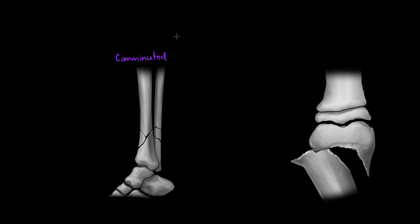Looking at our tibia and fibula here, we can see a new type of break called a comminuted fracture. This is where there has been a complete separation of bone into more than two or three pieces, depending on the classification criteria. On the tibia we can count three pieces of bone, and on the fibula as well — three pieces — so it's been completely separated.